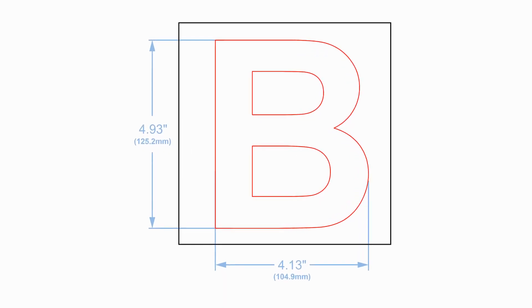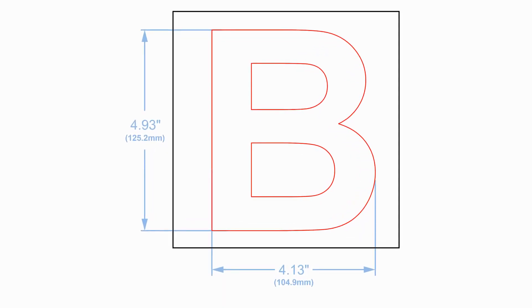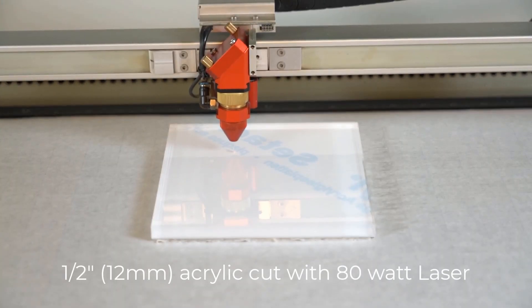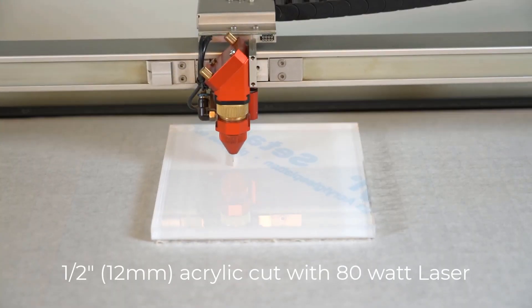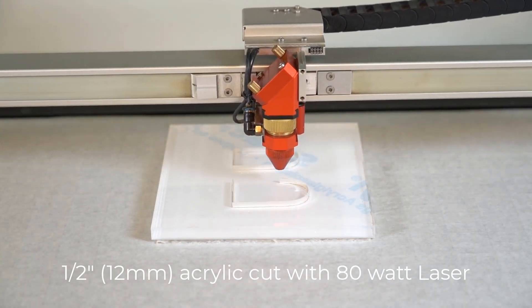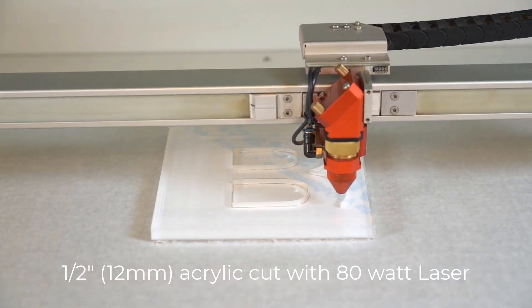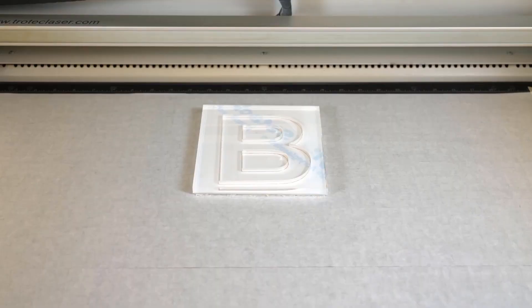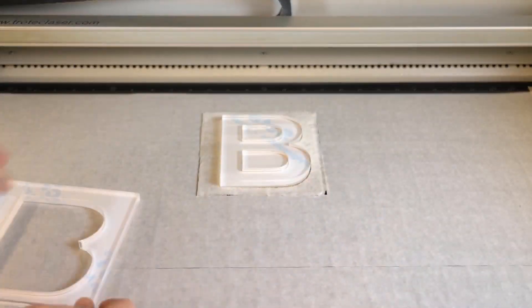Send your design file to the laser, being careful to select power settings appropriate for the thickness of your material. You may also wish to block off any unused areas of your laser bed as we've done here to provide a better vacuum. When finished, remove your cleanly cut acrylic part.